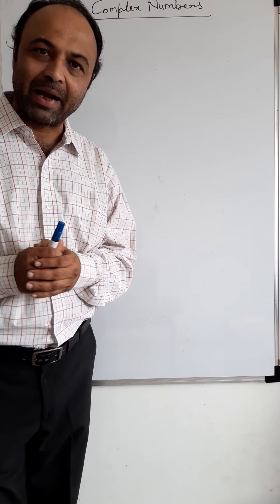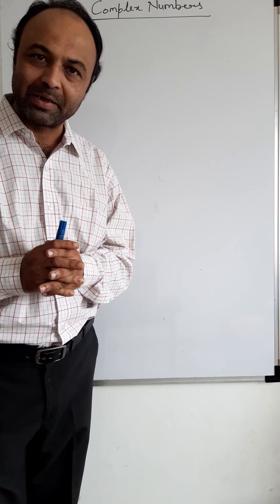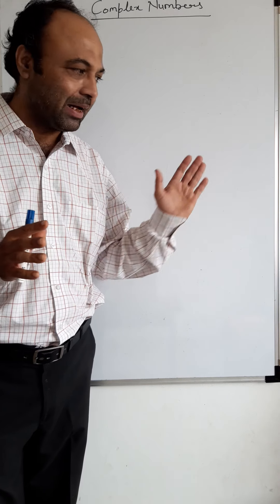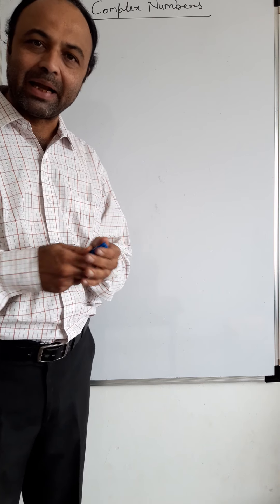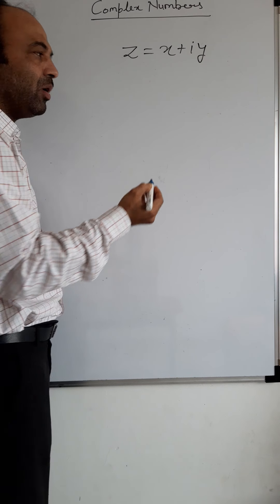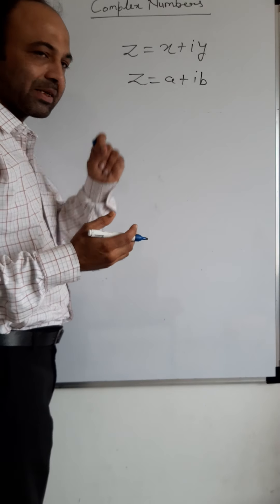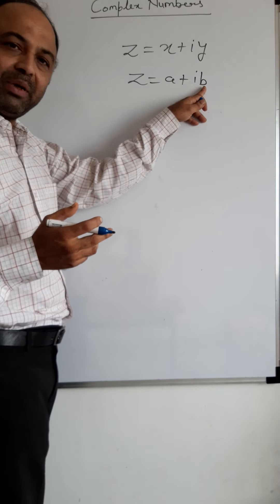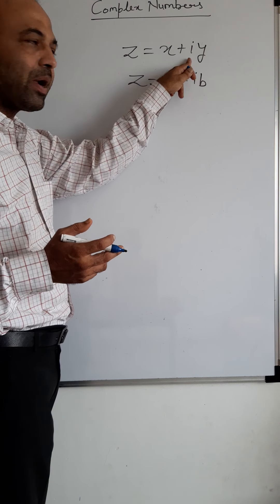Welcome back. In this new topic on complex numbers, in the first video you saw how a complex number is represented on an Argand diagram. It looks like the form a + ib, or x + iy, where z equals x + iy. Here x and a are real, b is real, and the imaginary part is b (or y), while the real part is x (or a).